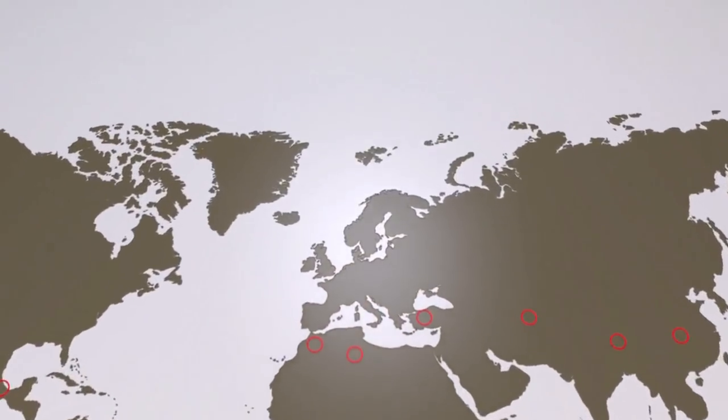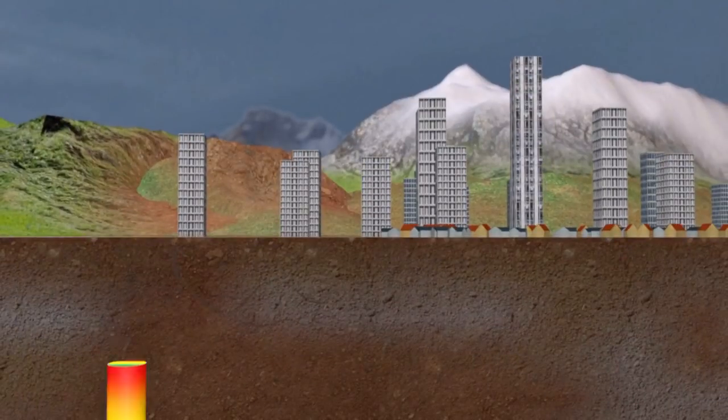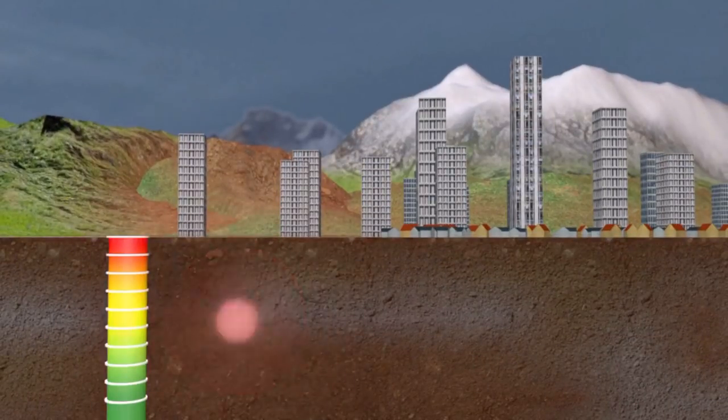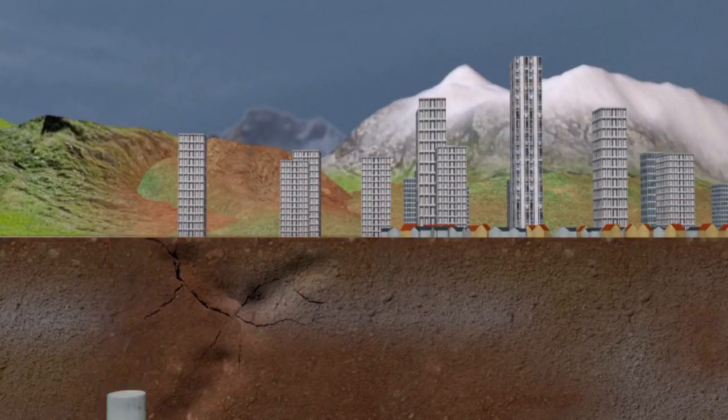The moment magnitude scale rates energy released during an earthquake. It was devised to measure large tremors more accurately than the older Richter scale. In theory, there's no limit, but never has an earthquake measured more than the 9.5 magnitude recorded in Chile in 1960.